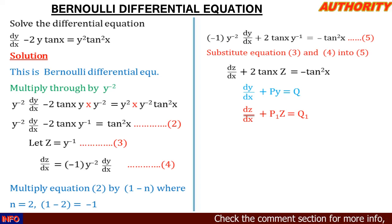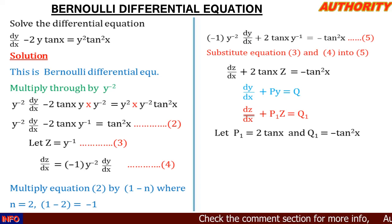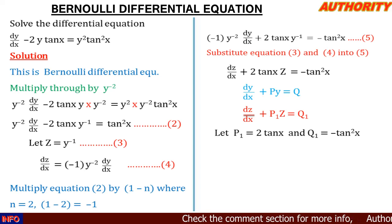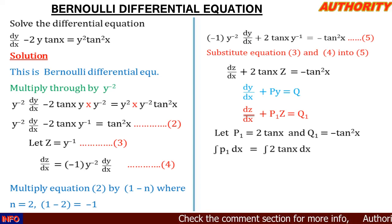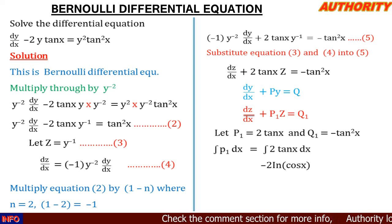Comparing with the standard linear form dz/dx + P₁·z = Q₁, we identify: P₁ = 2·tan(x) and Q₁ = minus tan²(x). We now integrate P₁ with respect to x: the integral of 2·tan(x) dx equals minus 2·ln|cos(x)|.